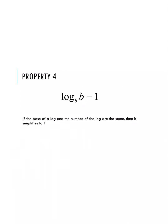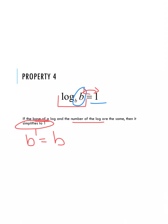Property number 4: log base b of b is equal to 1. If we have the same base as our expression, they completely cancel out and we get 1. Going back to our exponential form using the circle of life, we'd swap the b and the 1, and the 1 becomes an exponent: b to the 1st equals b. So log base b of b equals 1 because b to the 1st has to equal b. Anytime the base and the number of the log are the same, it always simplifies to 1.